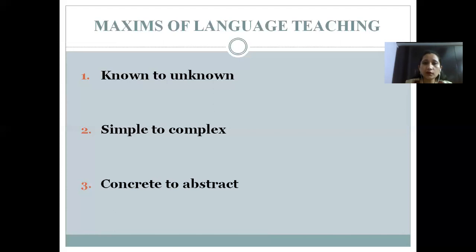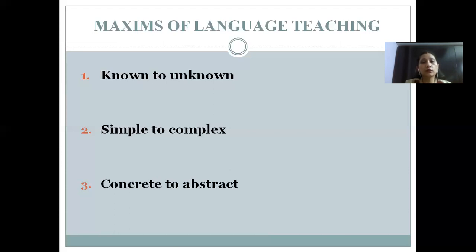Nouns — basic names of persons, places, animals, things, fruits that the child already knows in their surroundings — are something the child can relate to in everyday life. So while teaching the concept of nouns, you should always move from simpler, concrete types of nouns like proper nouns and common nouns, and gradually move to abstract nouns, which are a bit more difficult for the child to understand. You should always move from concrete to abstract while teaching any topic.